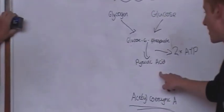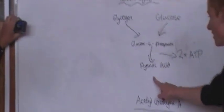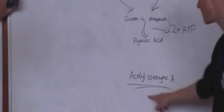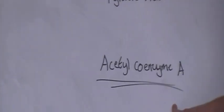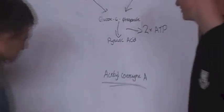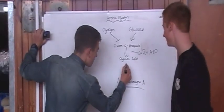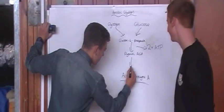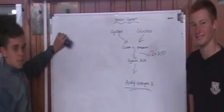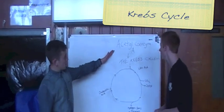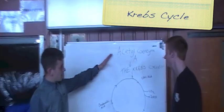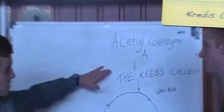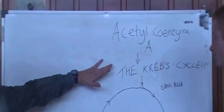Finally, pyruvic acid is then broken down into acetyl-coenzyme A, as there is oxygen available. Acetyl-coenzyme A then goes into the Krebs cycle.